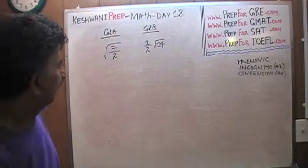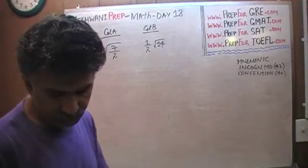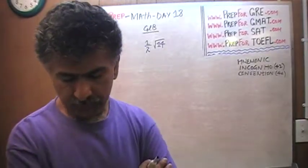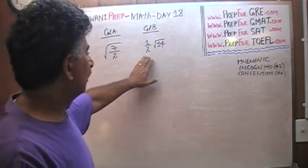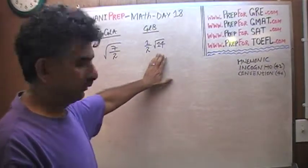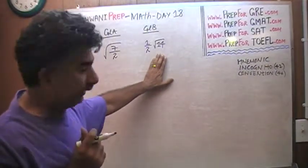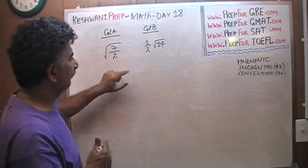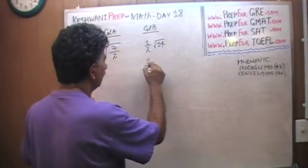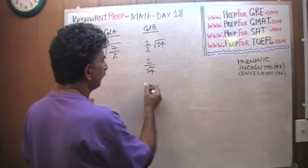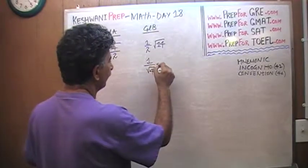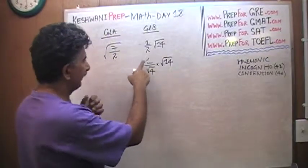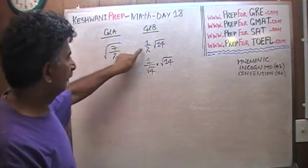Alright, so what do we have? How do we tackle it? Which quantity is bigger — square root of 7 over 2, or half times square root of 14? Well, the 2 here — can I write this 2 as 1 over square root of 4? Of course we can. 1 over square root of 4 is the same as 1 over 2 because the square root of 4 is 2.